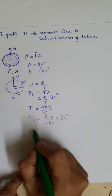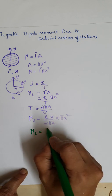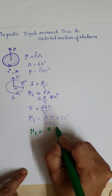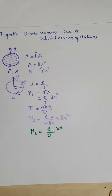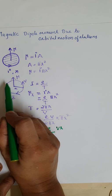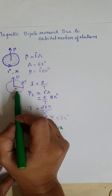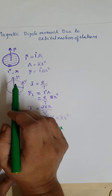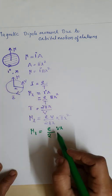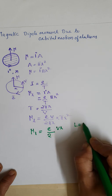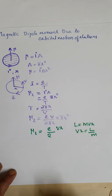Simplifying, pi R cancels and R cancels, giving us mu L equal to E times V times R divided by 2. The electron is orbiting around the nucleus with velocity V and radius R. If M is the mass of the electron, the orbiting electron constitutes an angular momentum — specifically the orbital angular momentum. Generally the angular momentum can be written as L equal to M V R, so V R equals L/M.